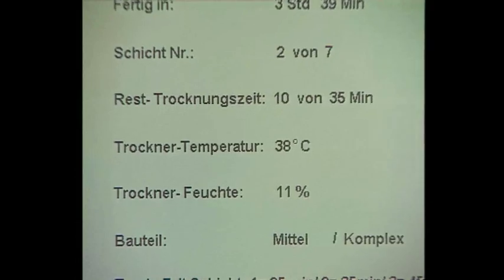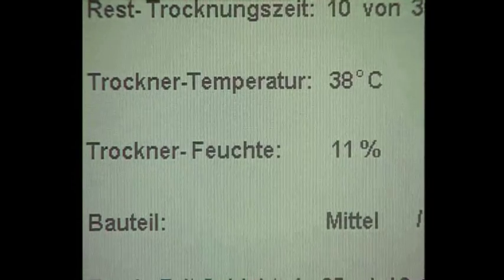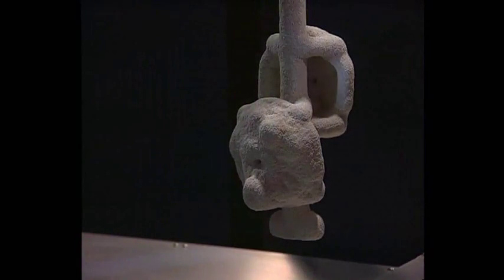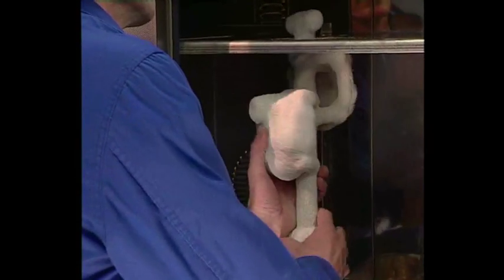Also, the filling level of the two slurry tanks is controlled permanently, as well as the temperature of the dryer and the humidity. At the end of the process, the system returns to its starting position, and the finished tree can be removed. Only four hours have passed from starting the system to the end of the shell building process.